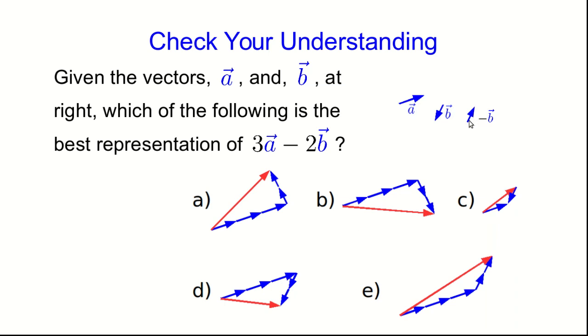Now notice there's only one of them that actually has a vector pointing in this direction. It's e. And so if you look here's 1a, 2a, 3a and then minus 1b, minus 2b and we started here and we end here so we draw the result this way. And so e is correct.